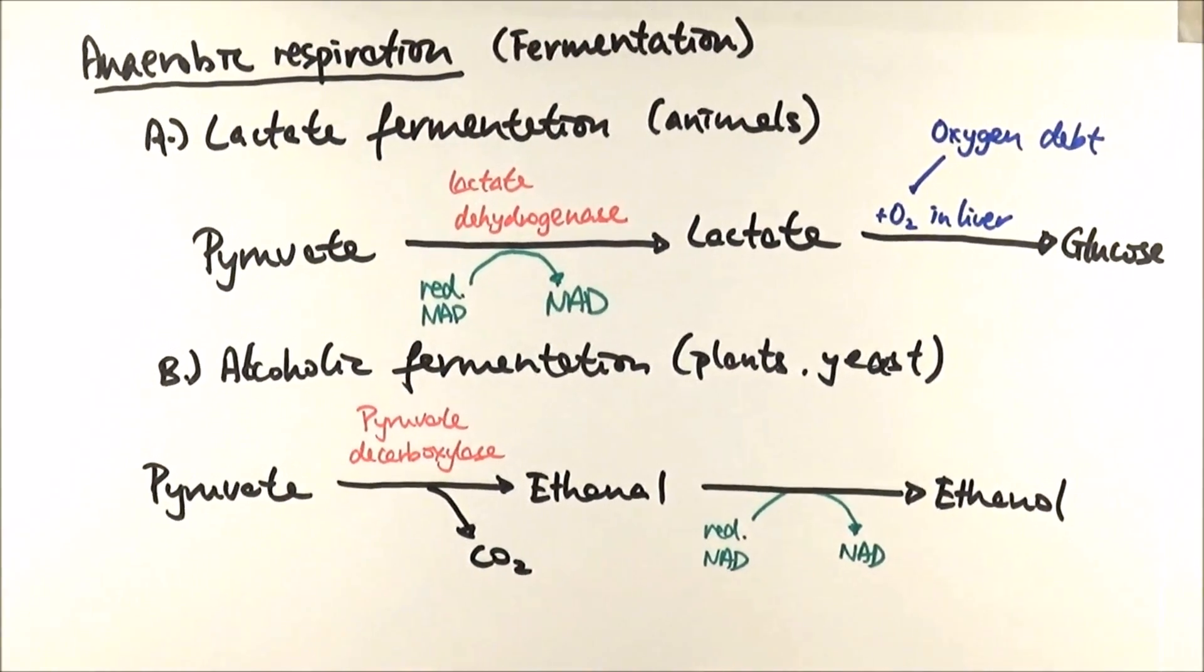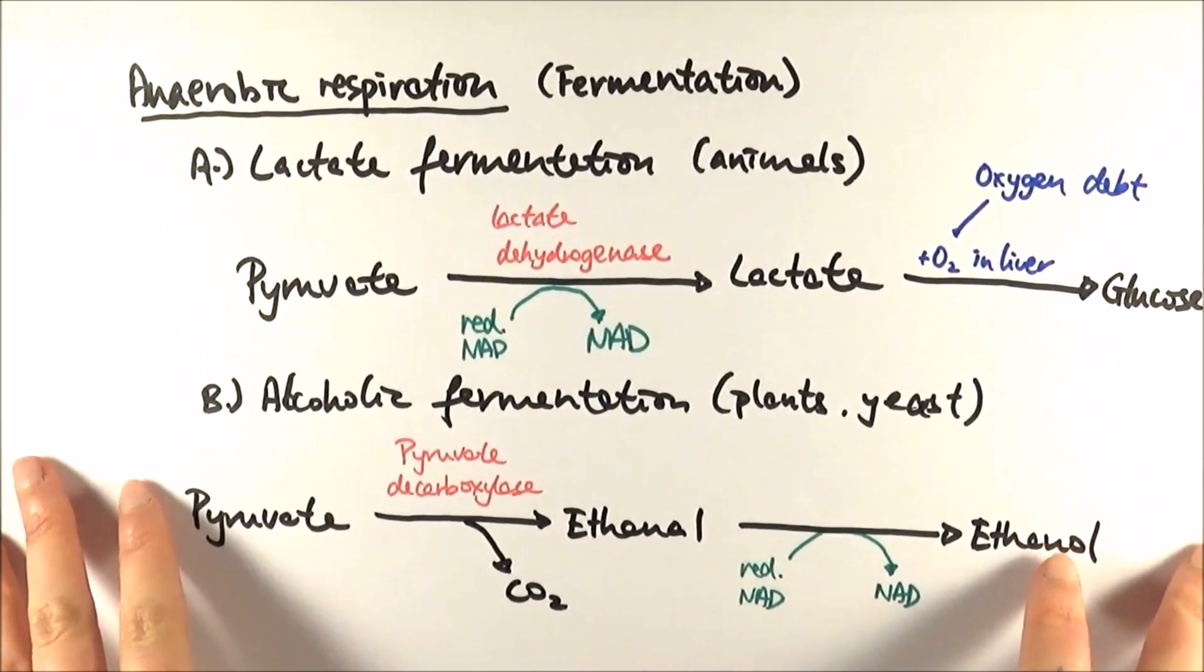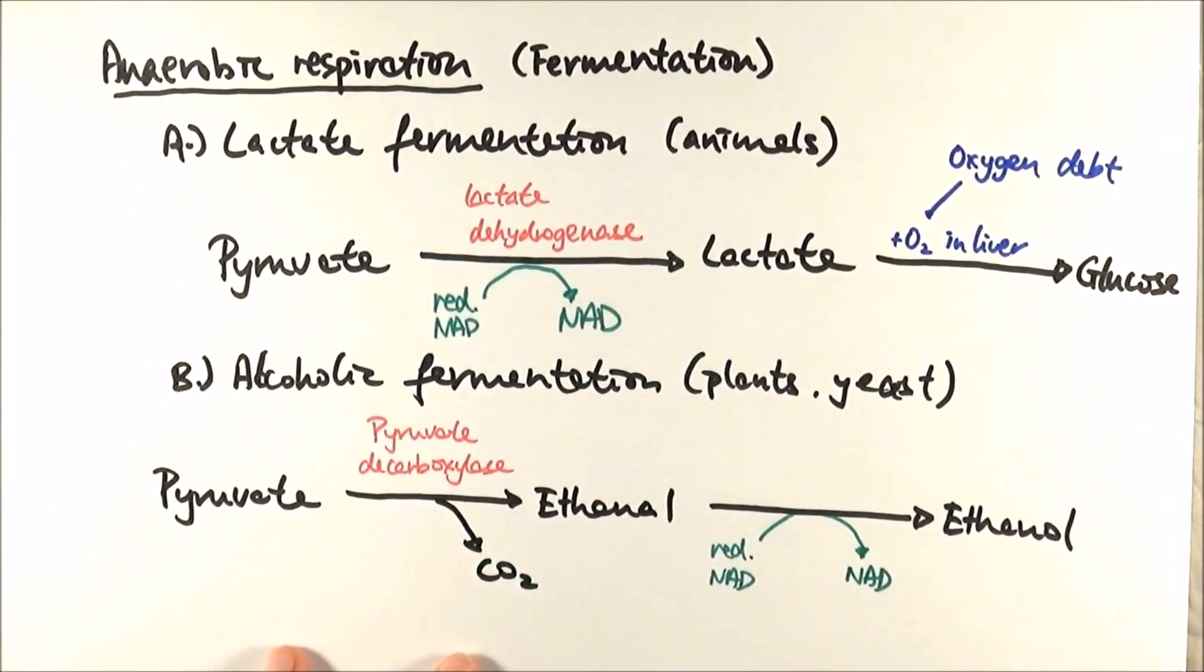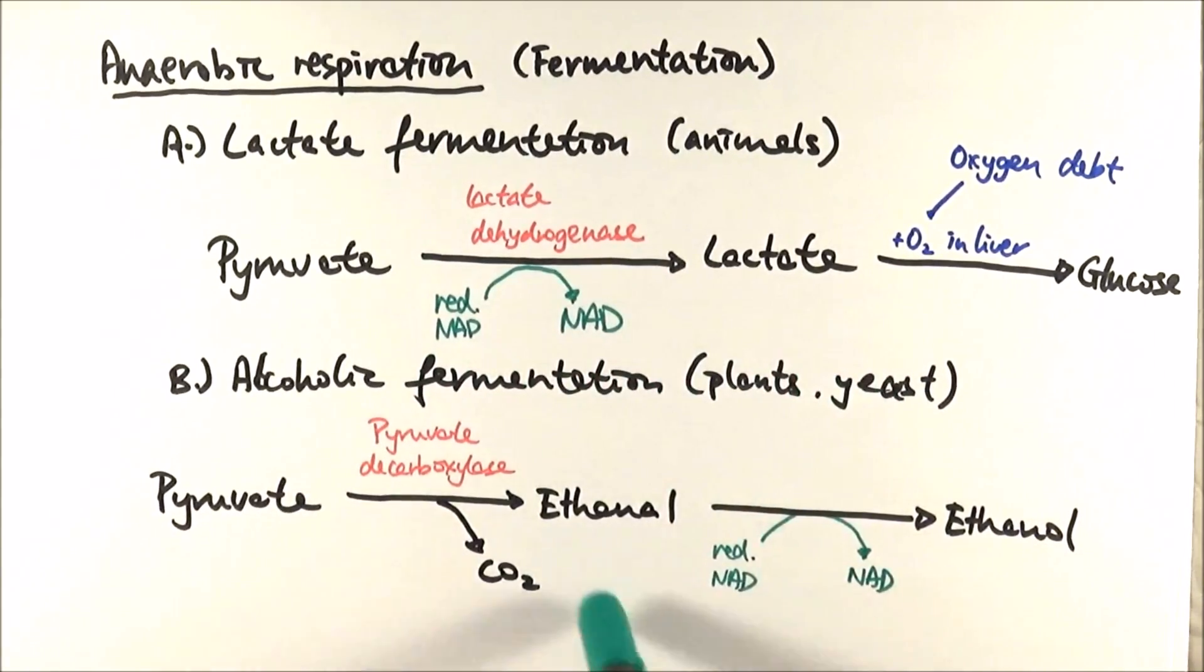And there you have it. That is anaerobic respiration in different organisms. In animals, we have lactate fermentation with these enzymes involved. Alcoholic fermentation, we have this enzyme involved to make ethanol, and we can use it to make alcohol and make bread as well.